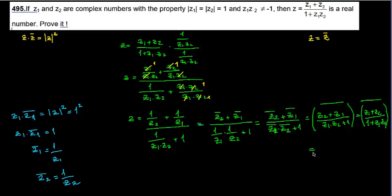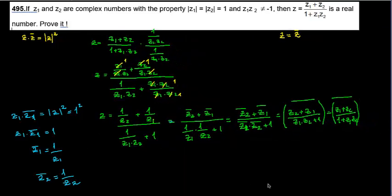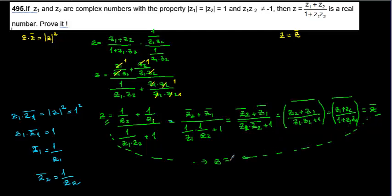This expression is exactly z-conjugate. So I have shown that z equals z-conjugate. Since z equals z-conjugate, z must be an element of the real numbers. This completes the proof that z is a real number.